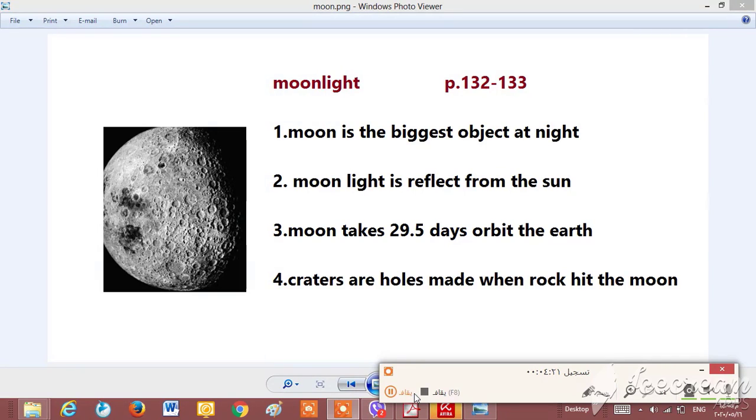Now we go to page 132 and we can abbreviate or summarize our lesson on this page. We have moonlight. We said that the moon is the biggest object at night.